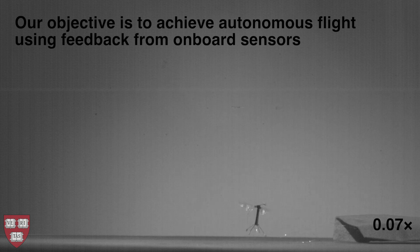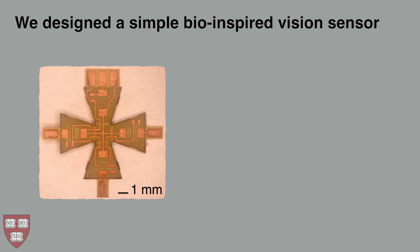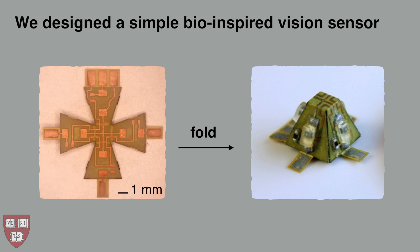To fly stably and autonomously, the vehicle must carry sensors on board to perceive the world. Due to its small payload capacity, the robot cannot carry a traditional camera. Instead, we developed a simpler visual sensor inspired by insects.